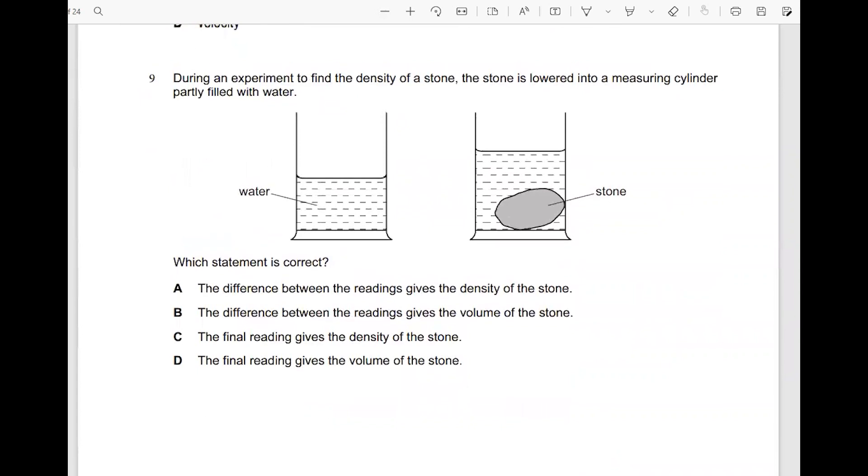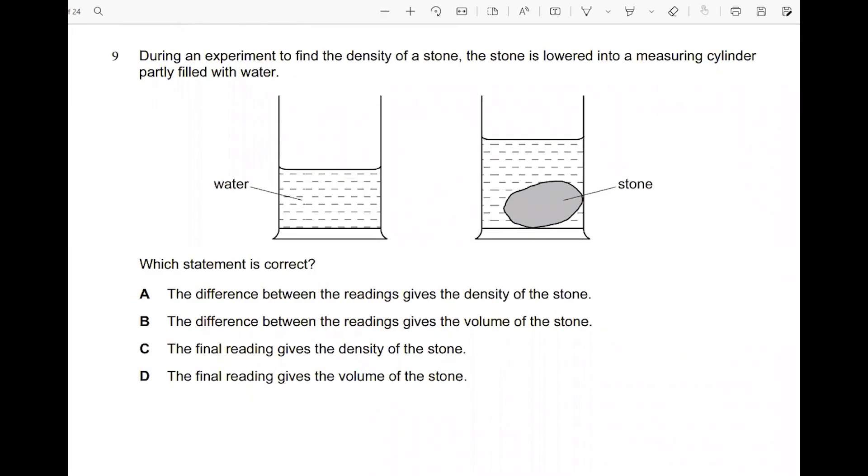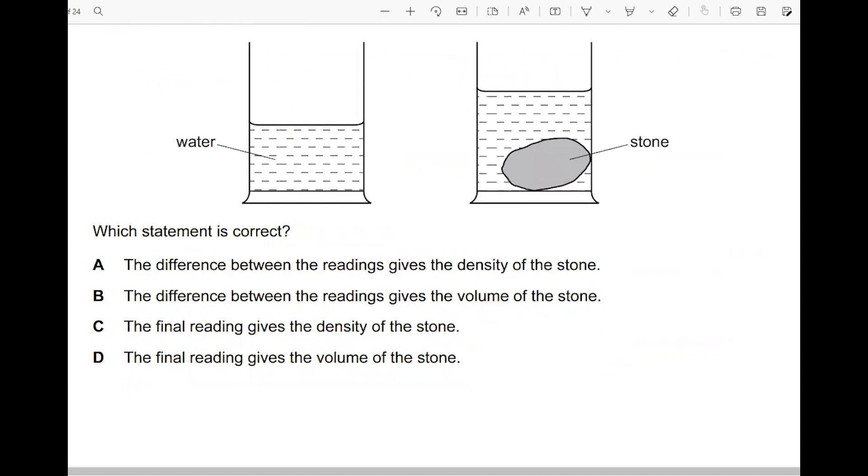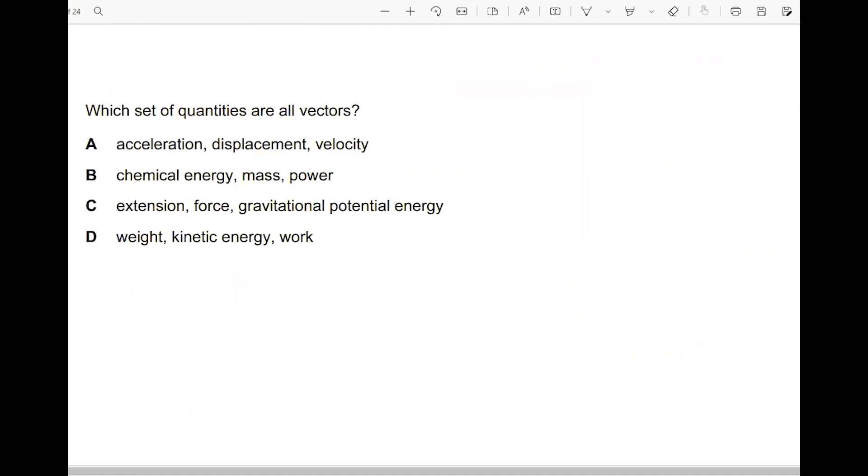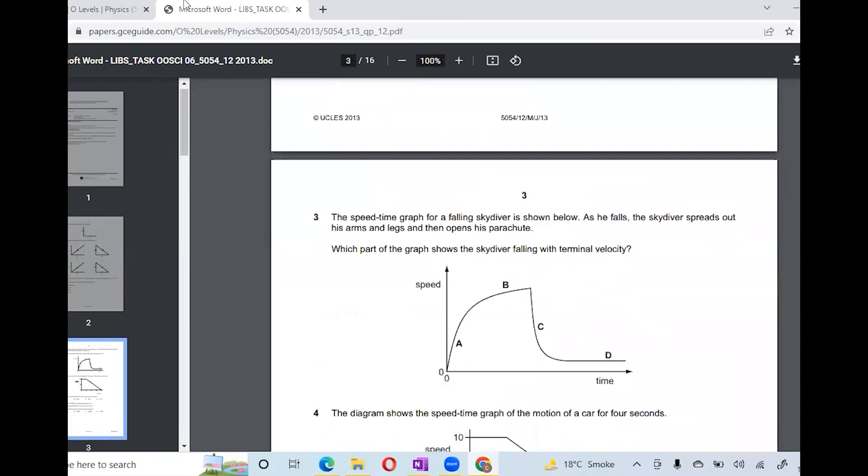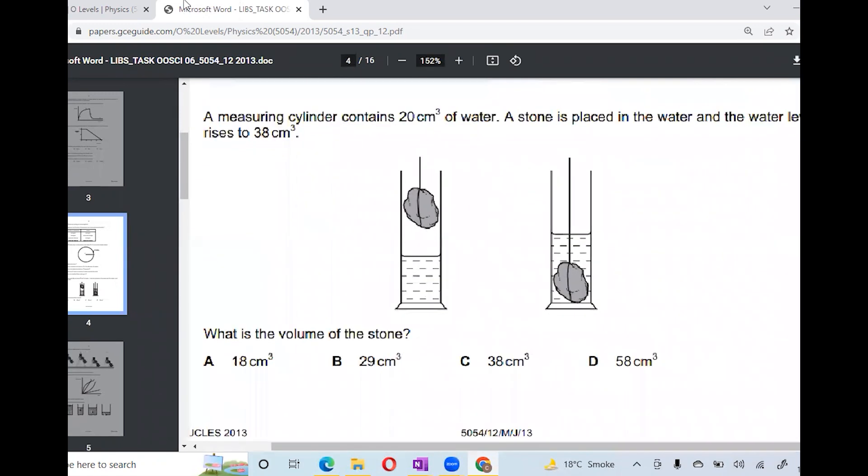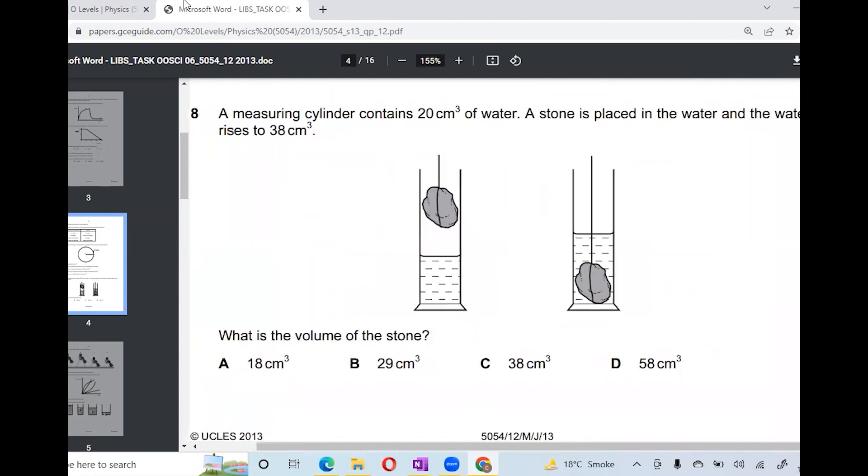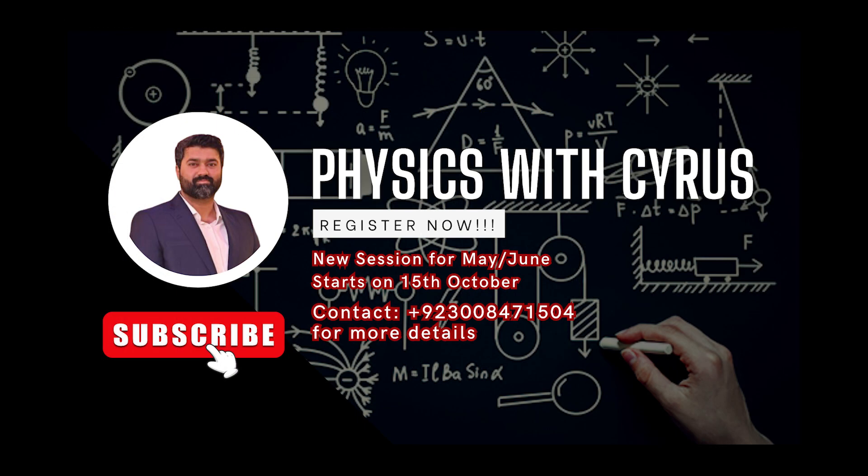I'm going to give you one question here. During an experiment to find the density of a stone, the stone is lowered into the measuring cylinder partly filled with water. Which statement is correct? It's B - the difference between the readings gives you the volume of the stone. This is called the displacement method. A measuring cylinder contains 20 cm cube of water, and a stone is placed in the water. The water level rises to 38. What is the volume of the stone? 38 minus 20 will give you the answer.